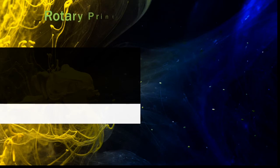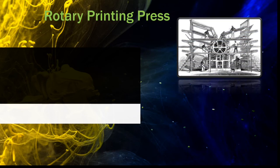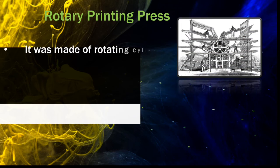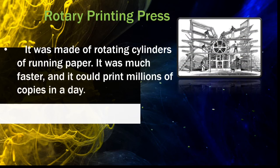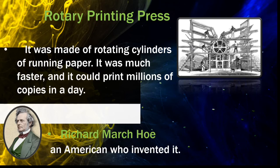Next was the rotary printing press. It was made of rotating cylinders of running paper. It was much faster and it could print millions of copies in a day. It was Richard March Hoe who invented it.